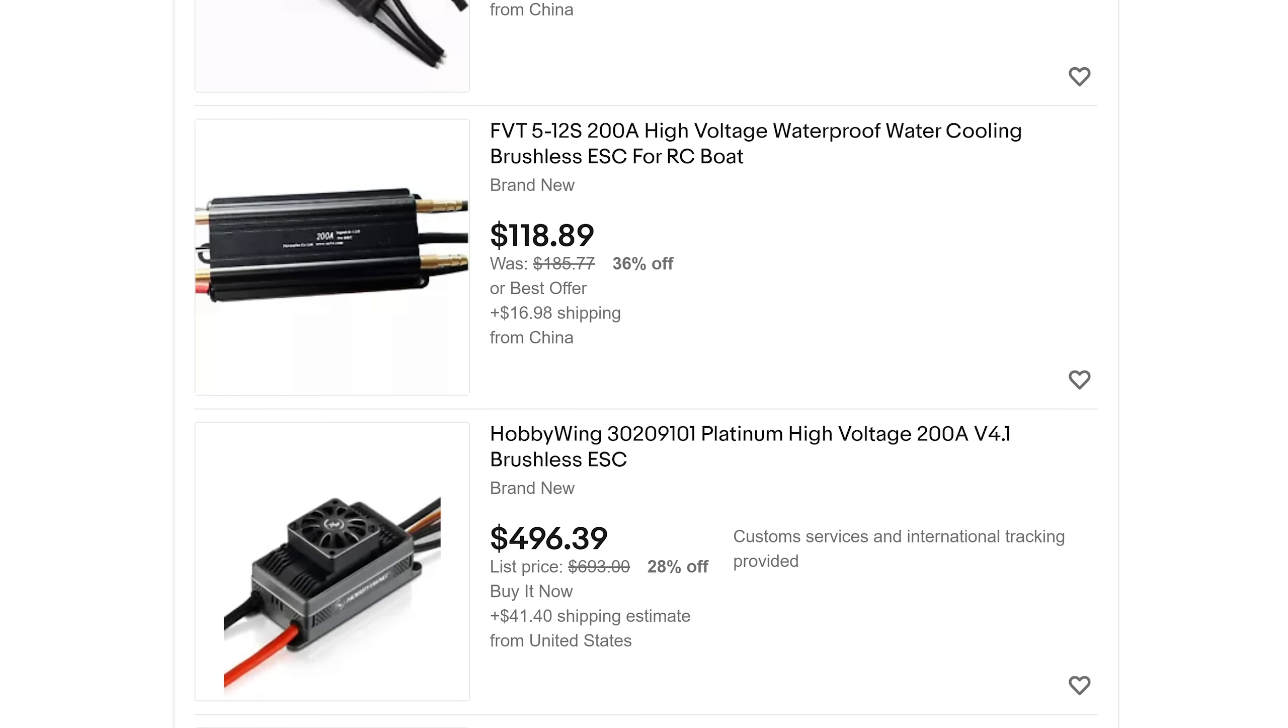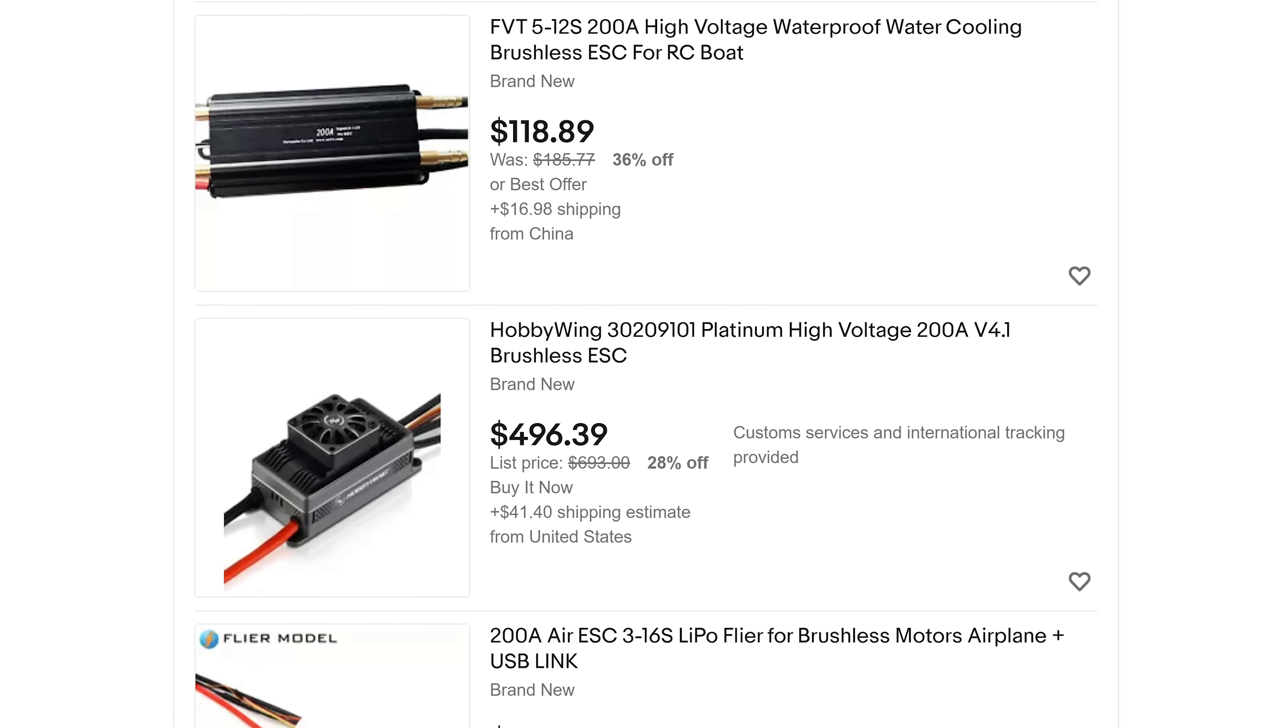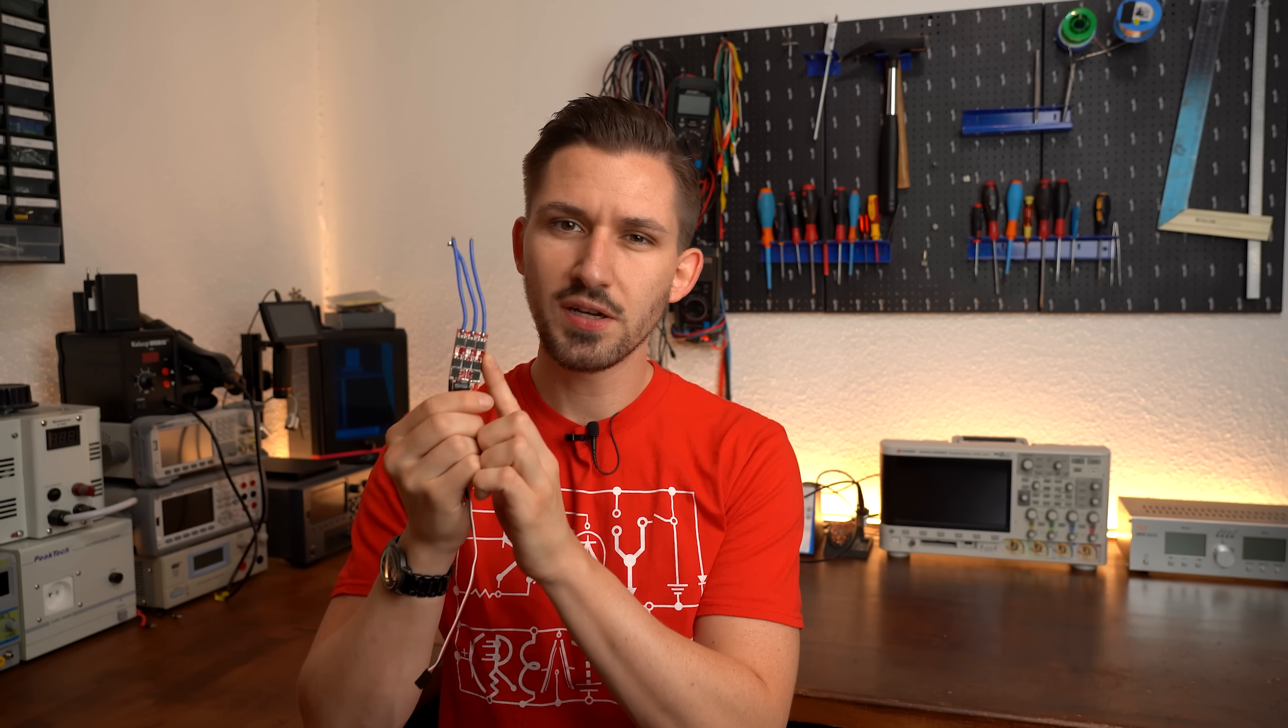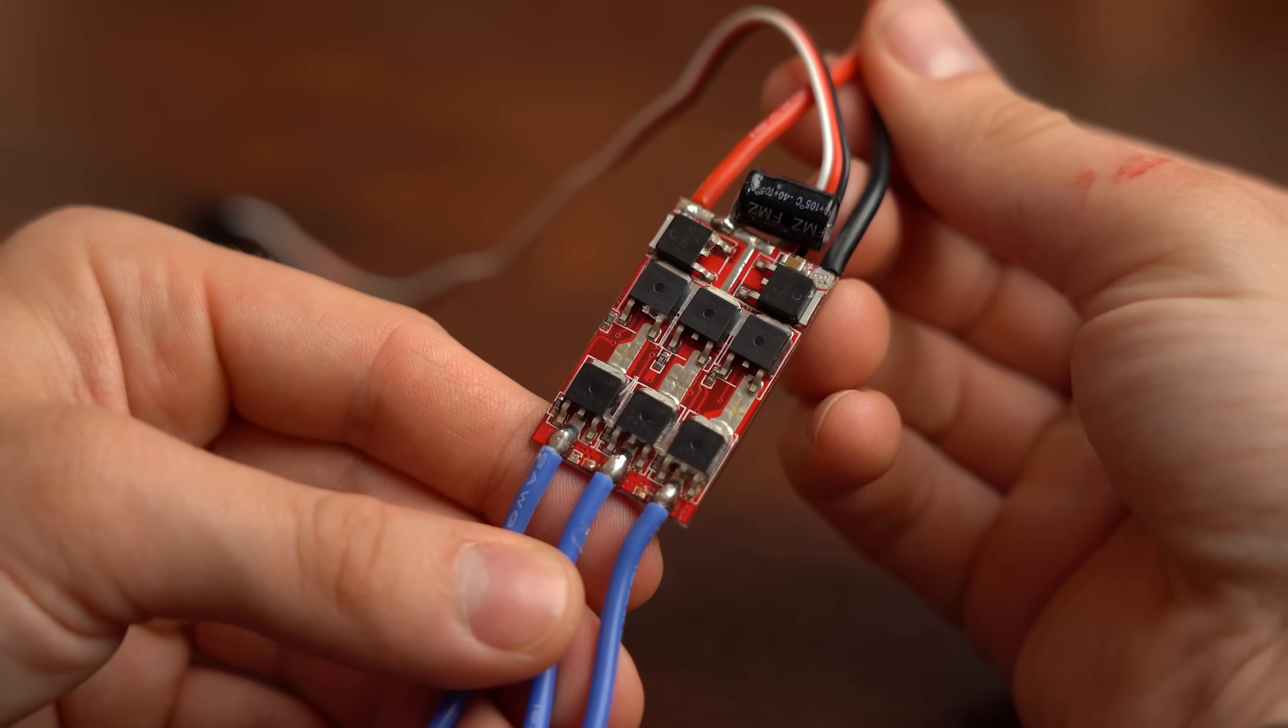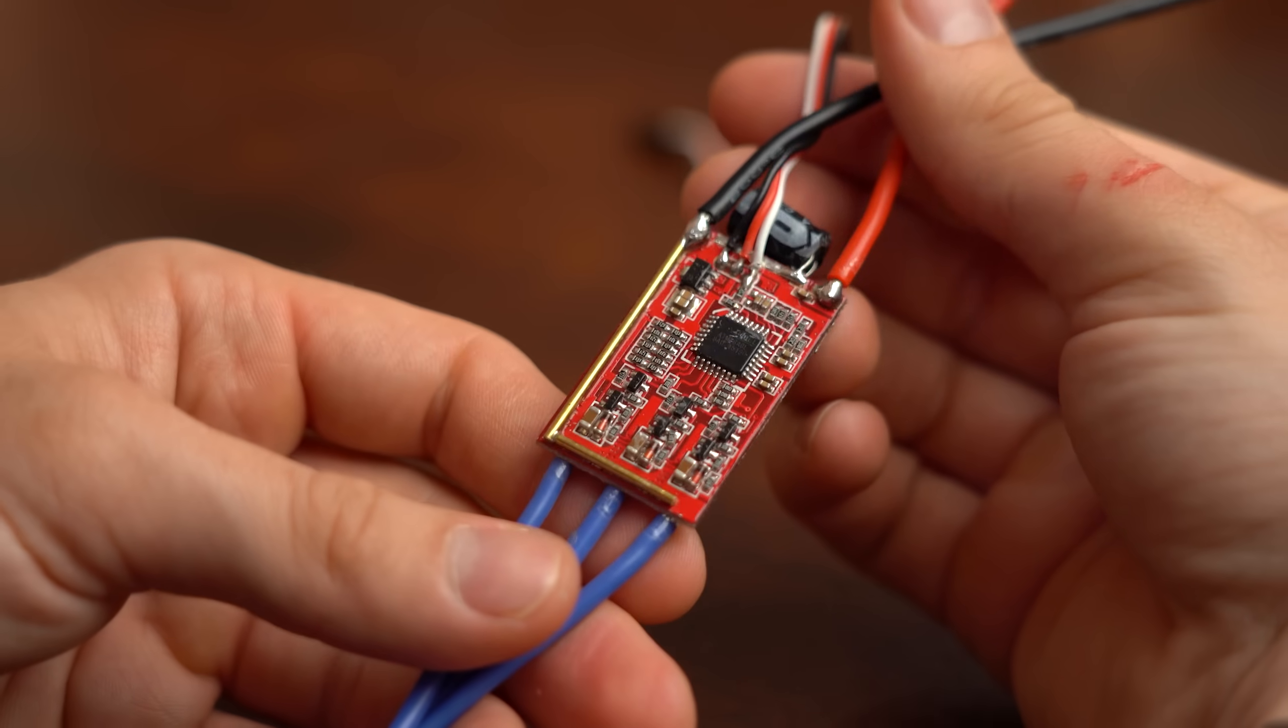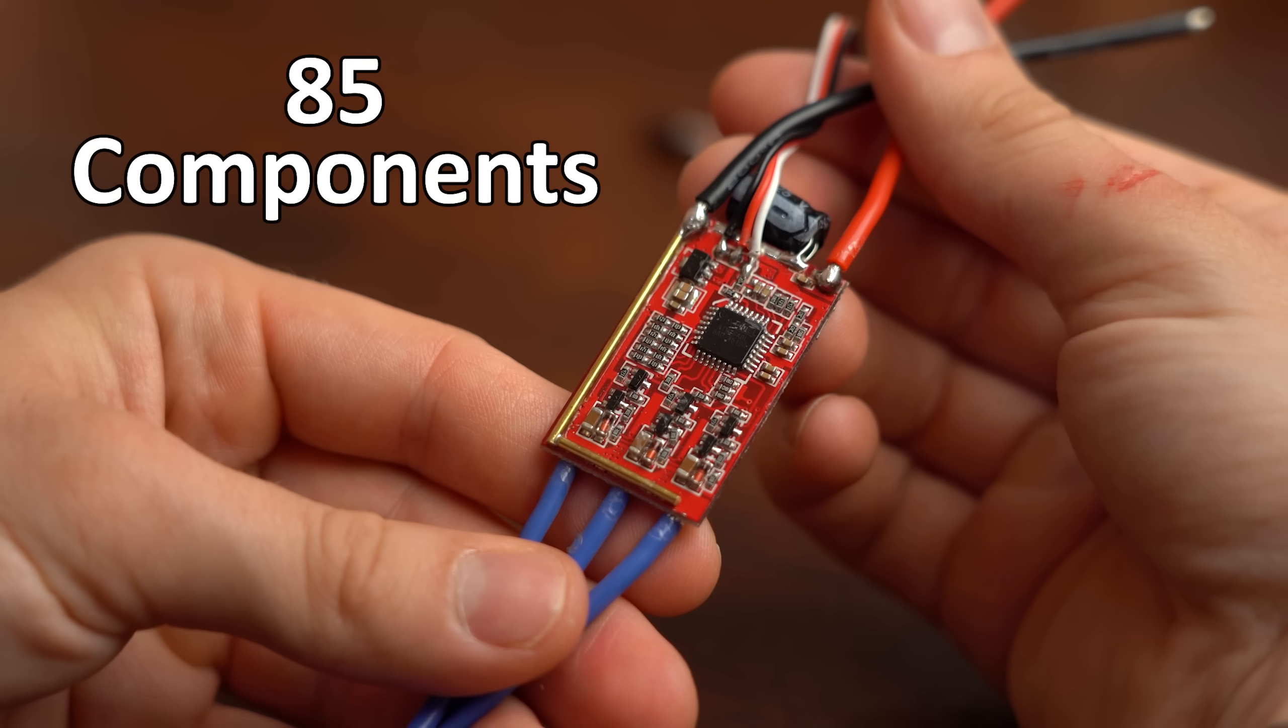That is why ESCs are so important and you can actually spend a ton of money on them if you need a real powerful one that can handle a big and powerful motor. So as you would expect, ESCs are normally not that simple to build, which we can easily prove through the number of components this super basic ESC is made of, which are 85 in total.